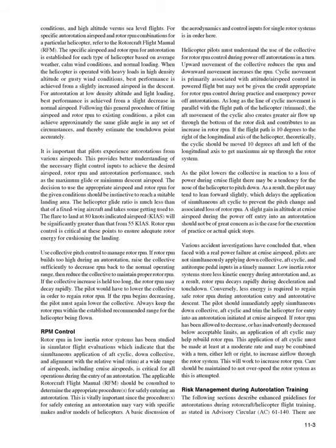It is important that pilots experience autorotations from various airspeeds. This provides better understanding of the necessary flight control inputs to achieve the desired airspeed, rotor RPM, and autorotation performance such as maximum glide or minimum descent airspeed. The decision to use the appropriate airspeed and rotor RPM for the given conditions should be instinctive. The helicopter glide ratio is much less than that of a fixed-wing aircraft. The flare to land at 80 KIAS will be significantly greater than that from 55 KIAS. Rotor RPM control is critical at these points to ensure adequate rotor energy for cushioning the landing.